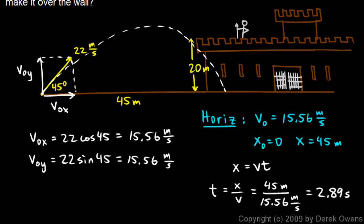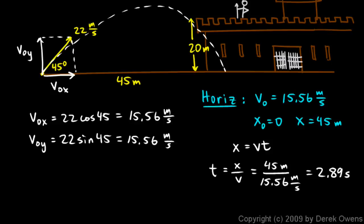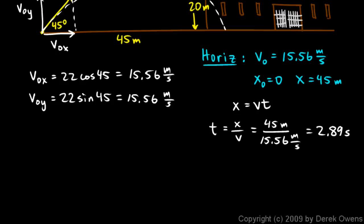So to find the height at that time, we think about the vertical motion. So let's deal just with the vertical motion for a second. The initial velocity is not 22 meters per second. It's the vertical component of that initial velocity, 15.56 meters per second.